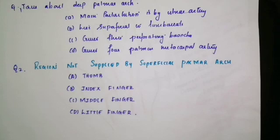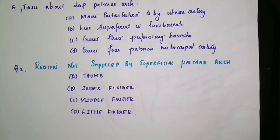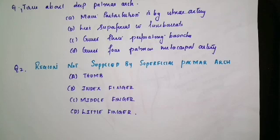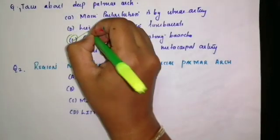First question: which is true about the deep palmar arch? Option A — main contribution is by the ulnar artery — is wrong because the main contribution to the deep palmar arch is by the radial artery. Option B — lies superficial to the lumbricals — is wrong because the deep palmar arch lies deep to the flexor tendons and lumbricals. Option C — gives 3 perforating branches — is correct. Option D — gives 4 palmar metacarpal arteries — is wrong because it gives only 3. So option C is the right answer.